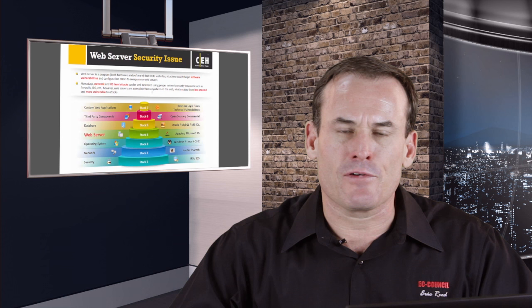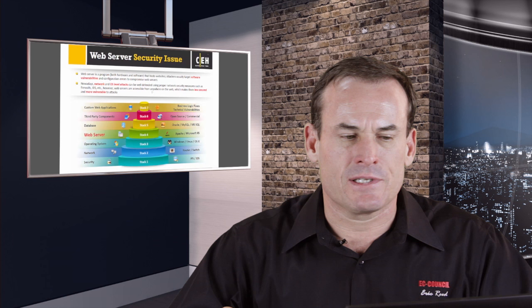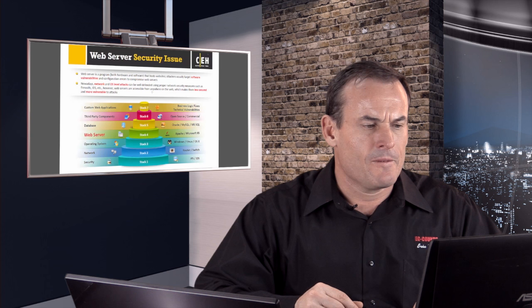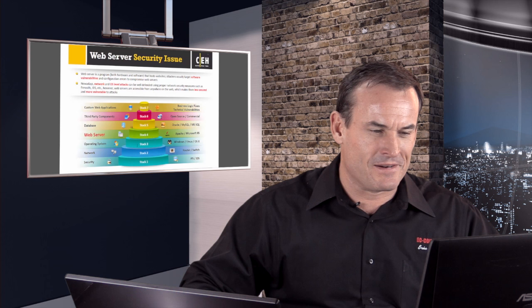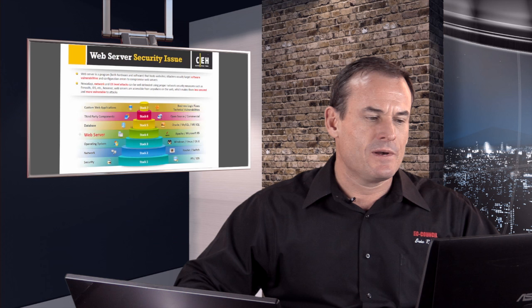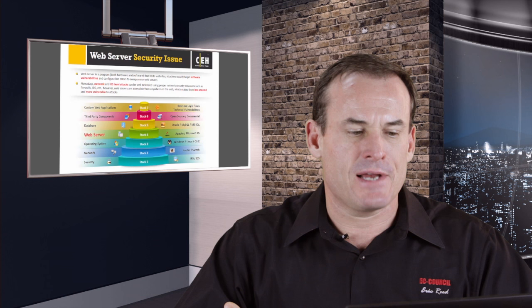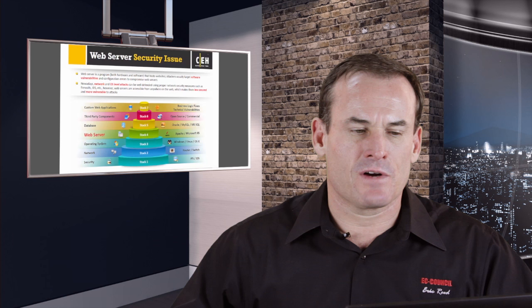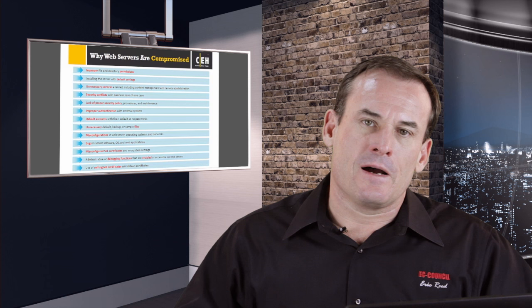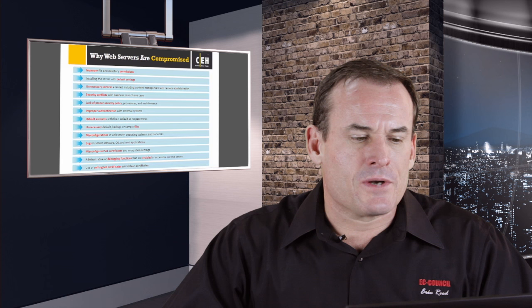There are a few different categories we'll be looking at over the next couple of modules, with some different types of categorical attacks. The possibilities are almost limitless on web applications. The slide depicts the vulnerability profiler stack: custom web applications, third-party components, the database, the web server itself — in this case Apache and Microsoft's IIS — the underlying operating system, and the network and security layer. We'll be focusing on the server itself and identifying potential issues that may make a web server vulnerable.